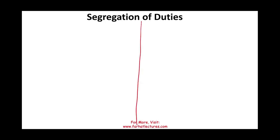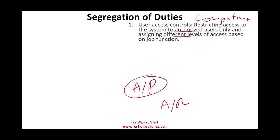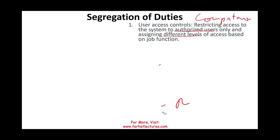Starting with segregation of duties in a computerized system: one way to implement it is through user access control, meaning you restrict access to the system to authorized users only, assigning different levels of access based on job function. If you work in accounts payable or accounts receivable, you only have access to that application — you cannot access payroll or cash, for example.